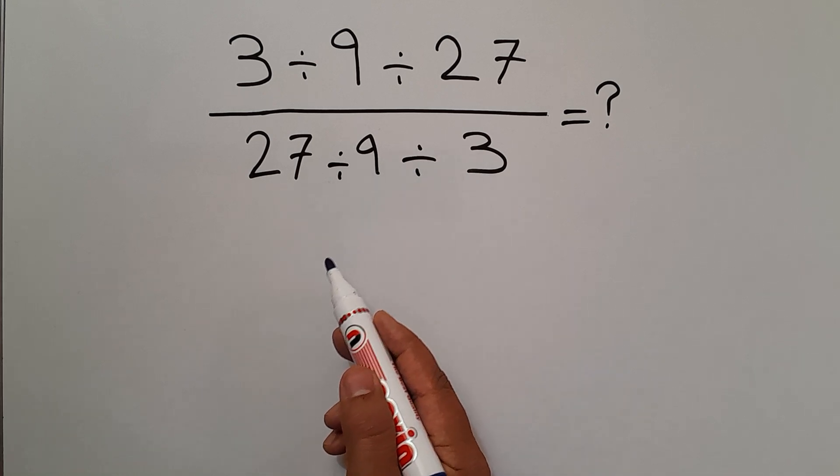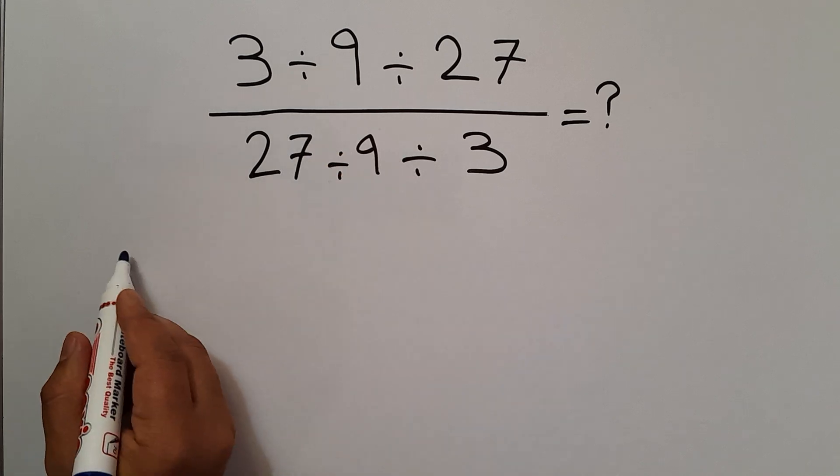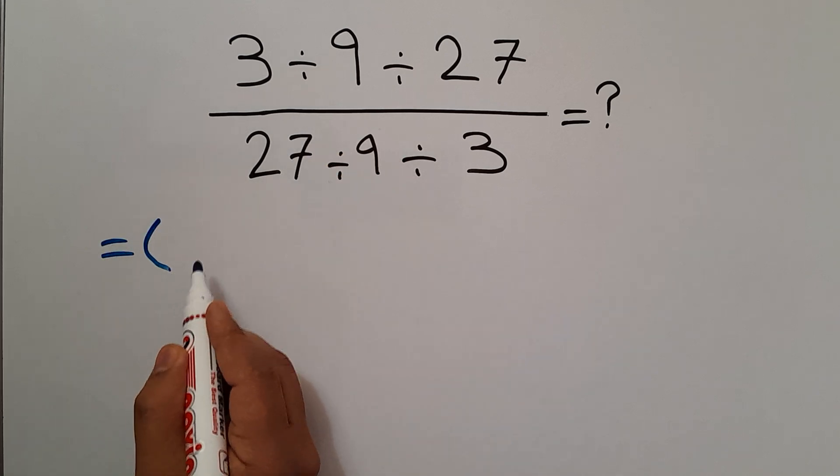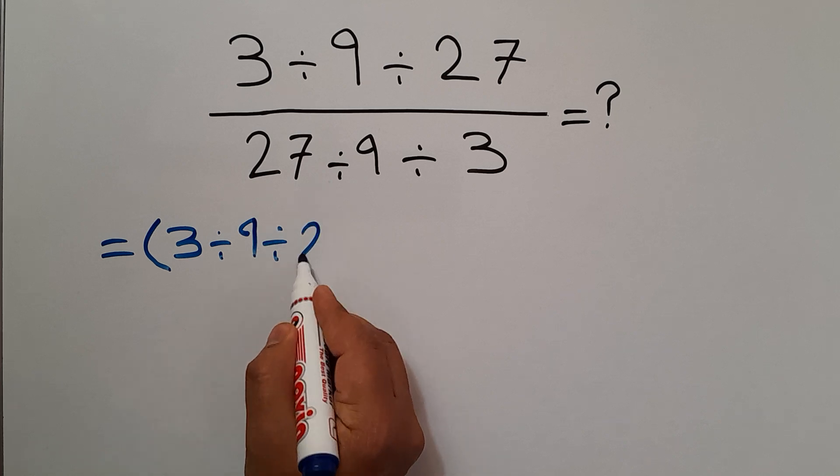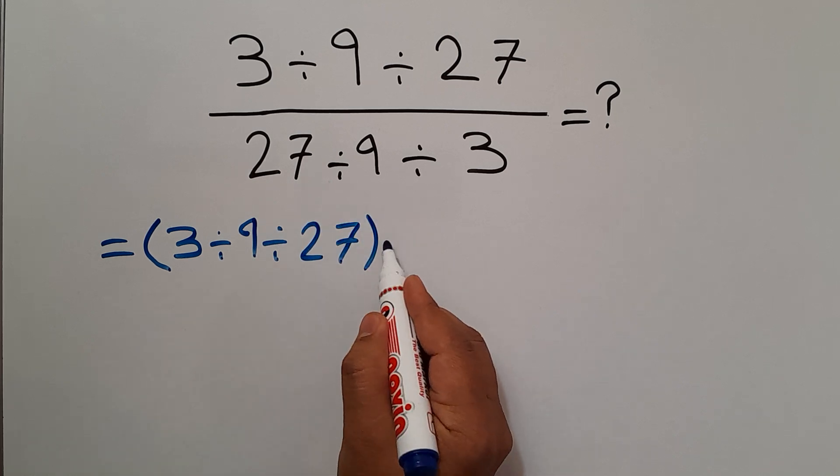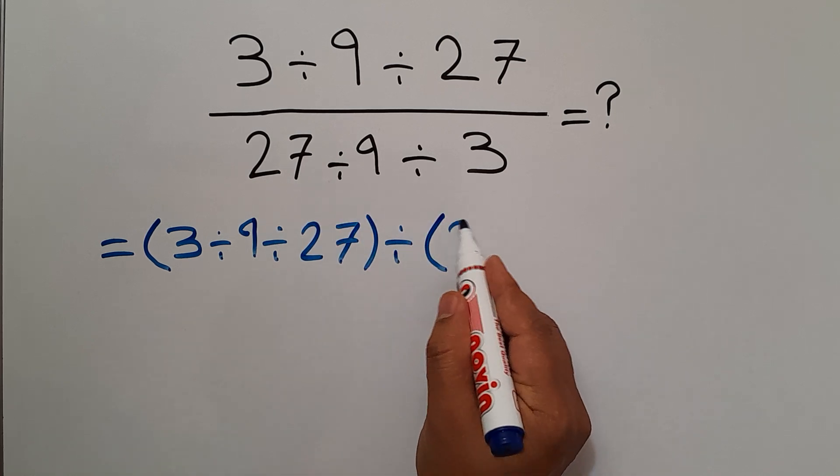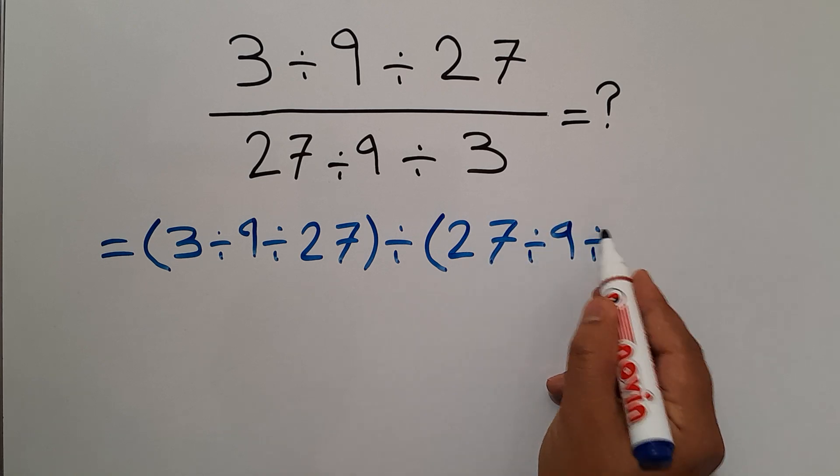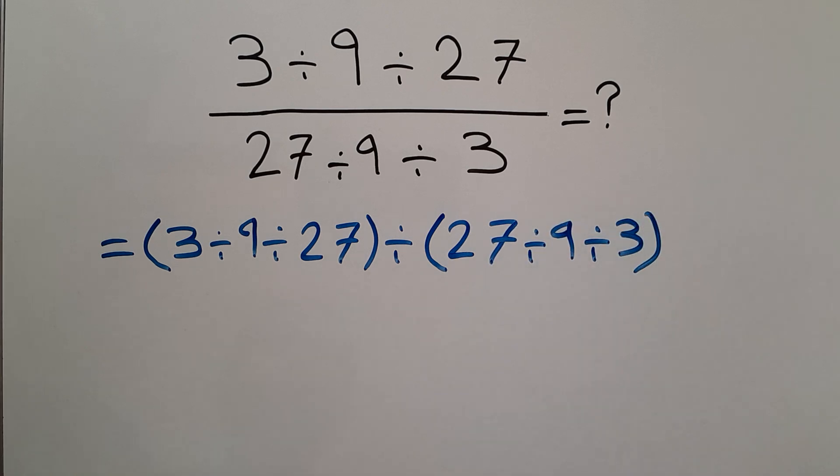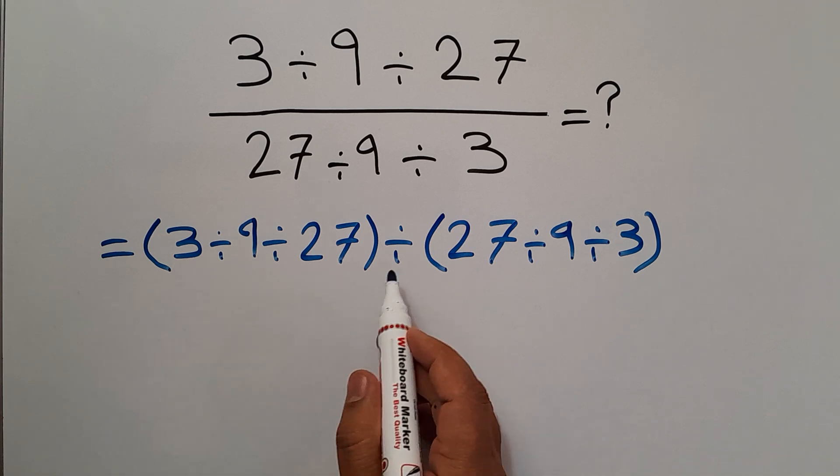Let's go and get started. Instead of this fraction we can write parentheses 3 divided by 9 divided by 27, divided by parentheses 27 divided by 9 and divided by 3. The numerator divided by denominator.